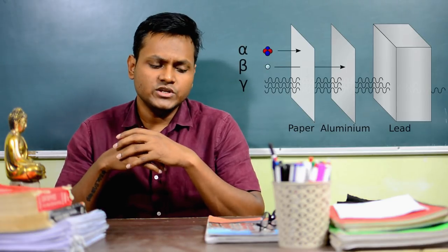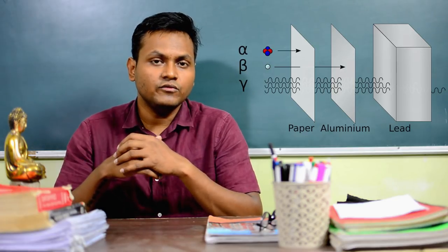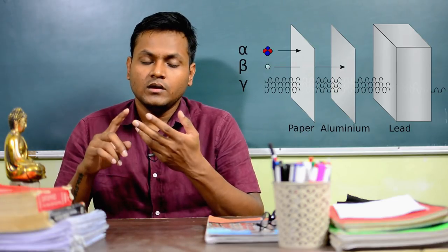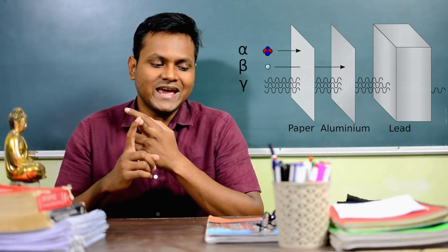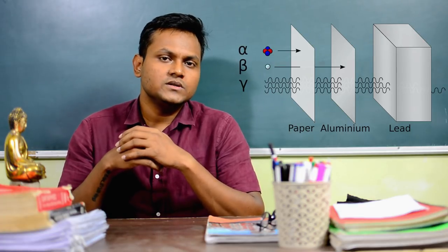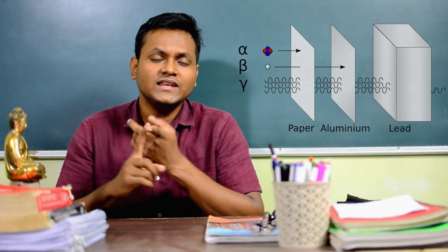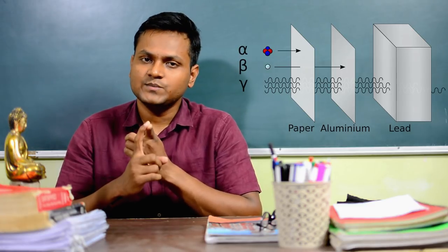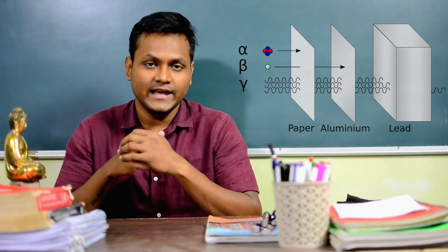Alpha decay involves emission of alpha particles, which have very low penetrative power — they can penetrate through only a few sheets of paper. Beta decay involves emission of beta particles, which can penetrate through a few centimeters of aluminum. Gamma photons have the highest penetrative power and can penetrate through a few centimeters of lead.